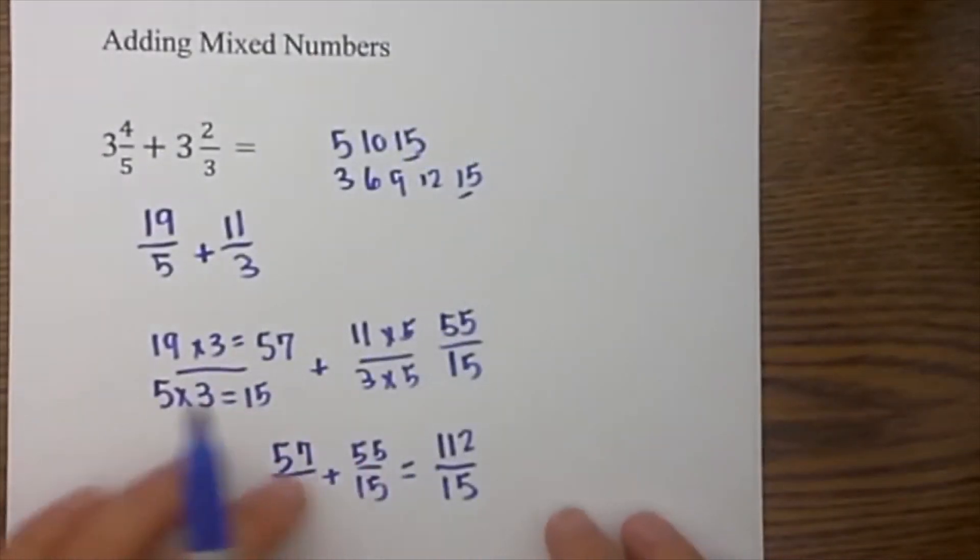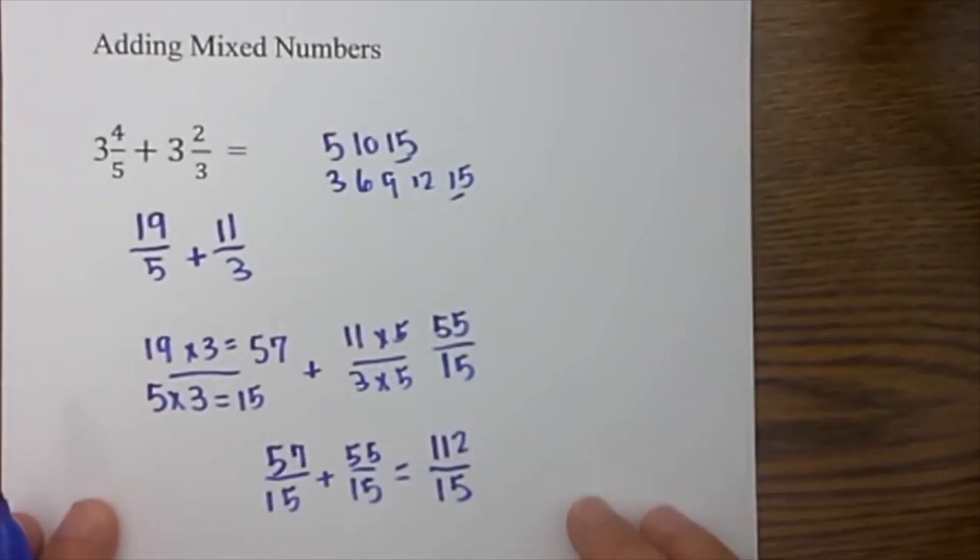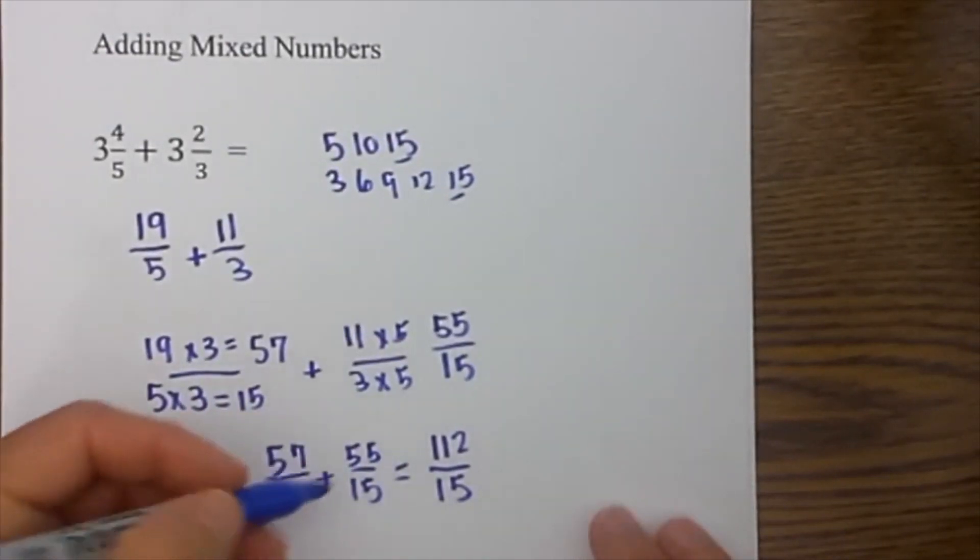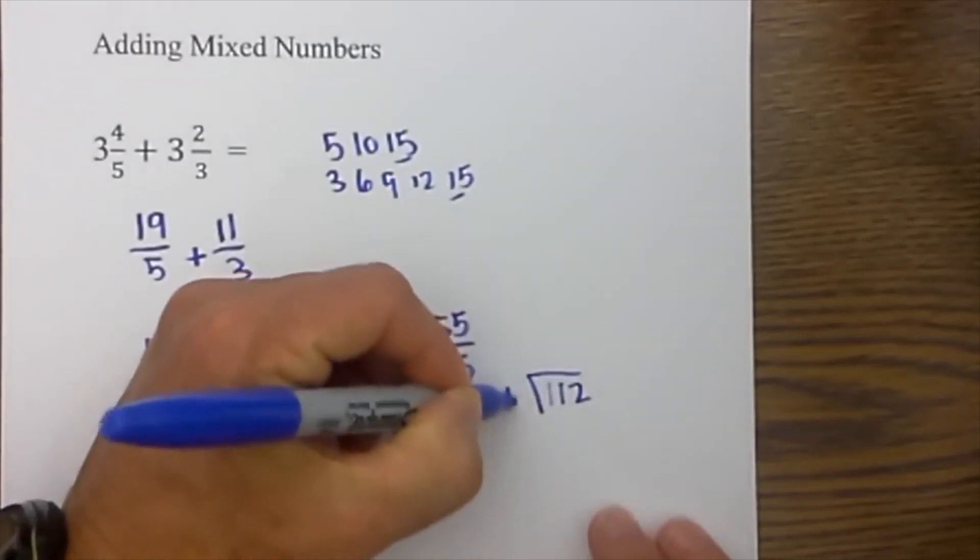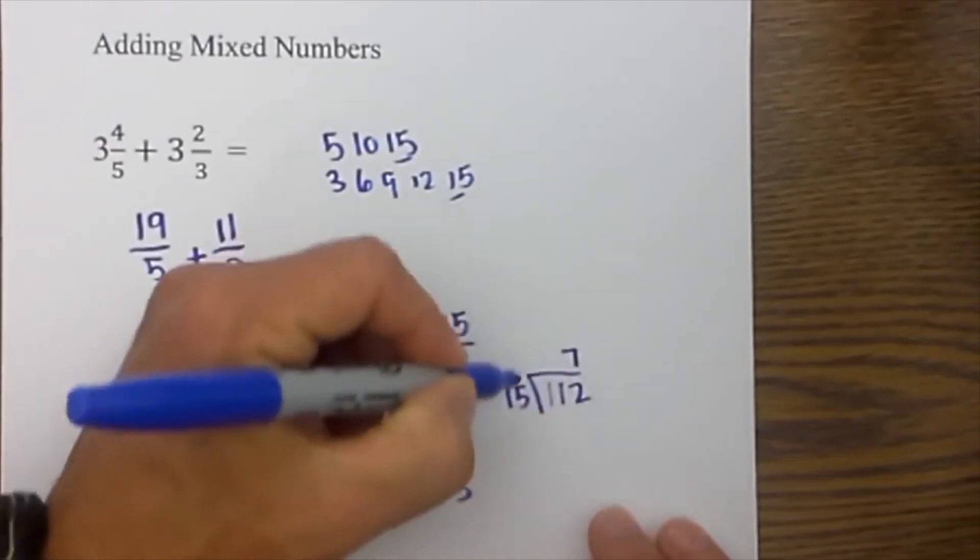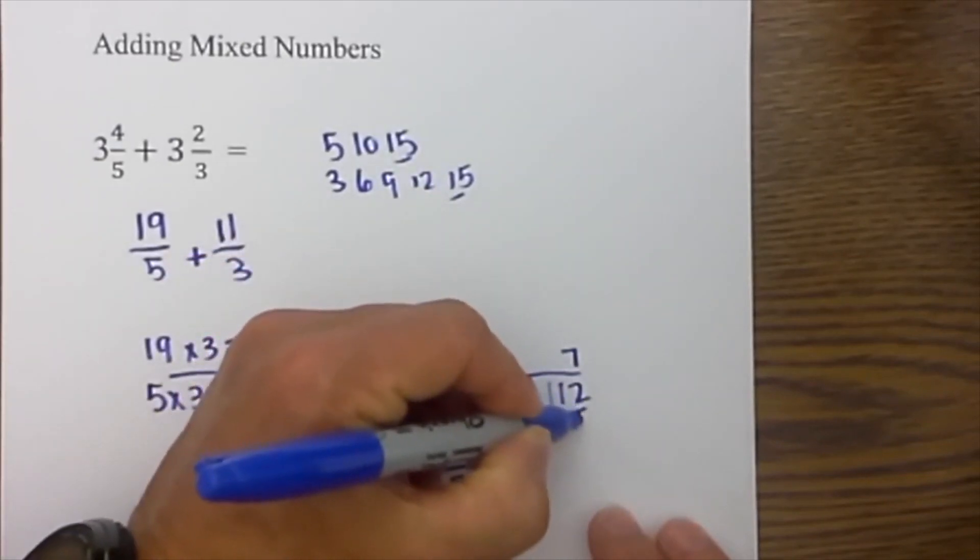Now that I added, I have 112 over 15. I will convert this to a mixed number by dividing 112 by 15. 15 will go into 112 seven times which is 105.